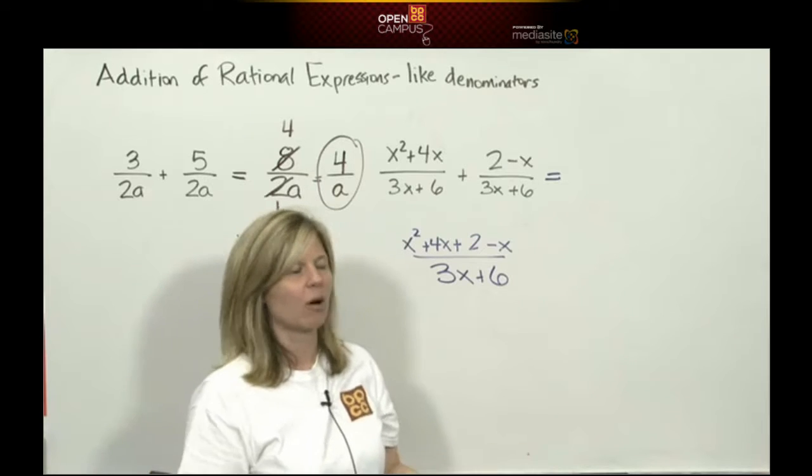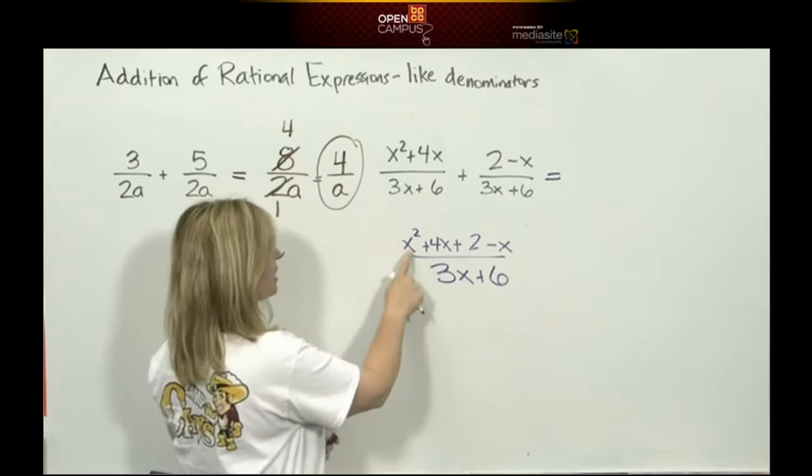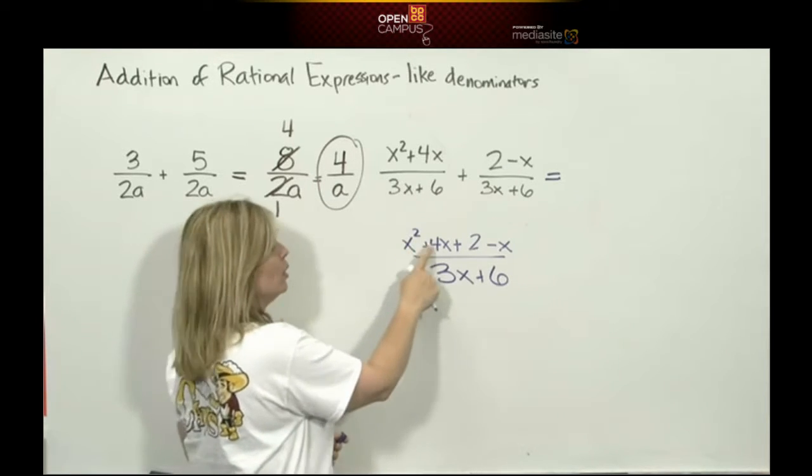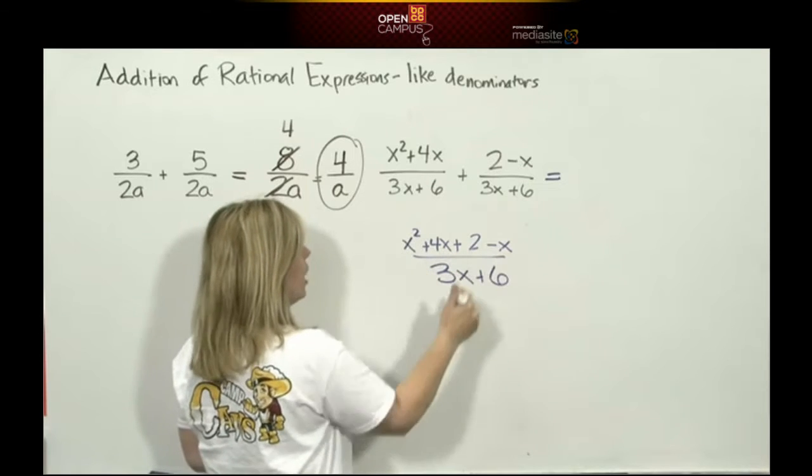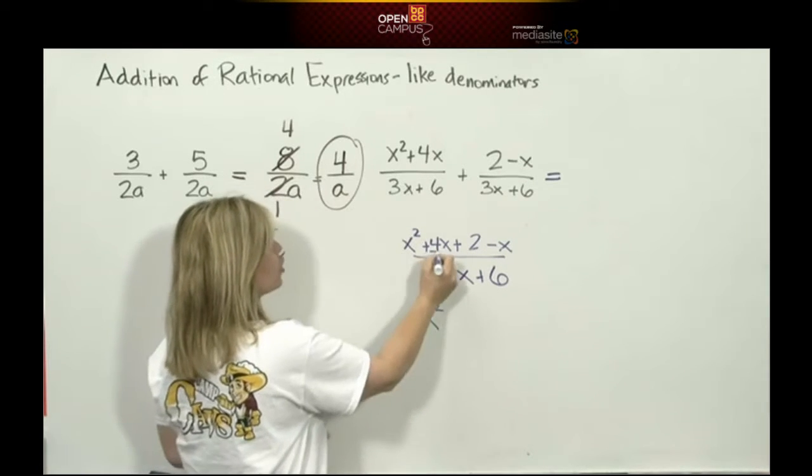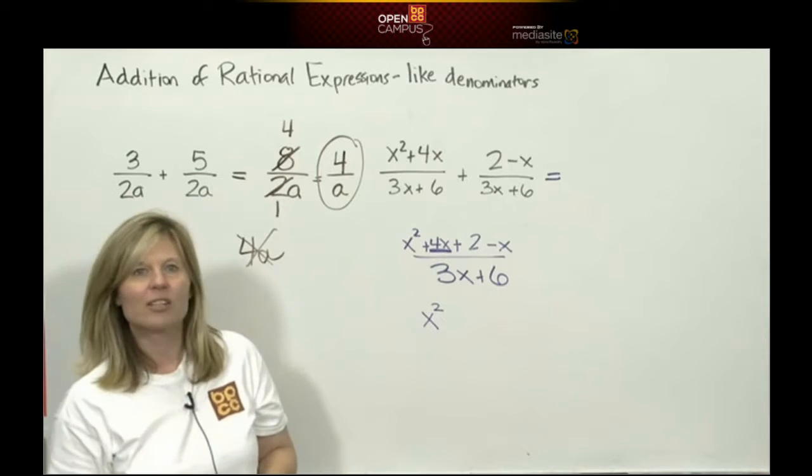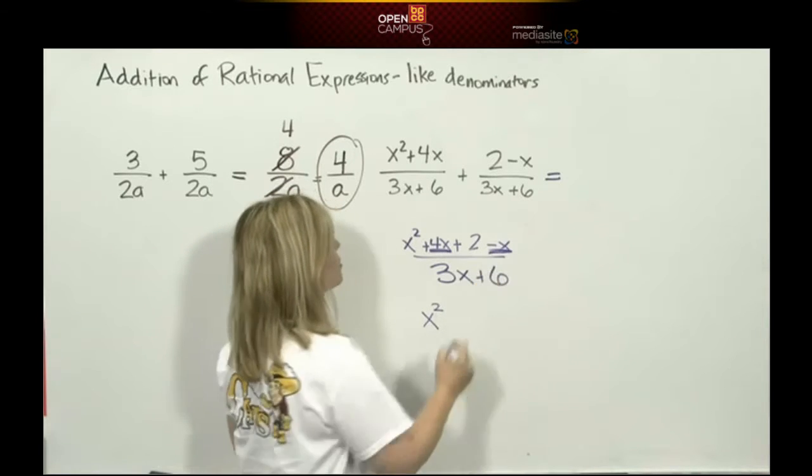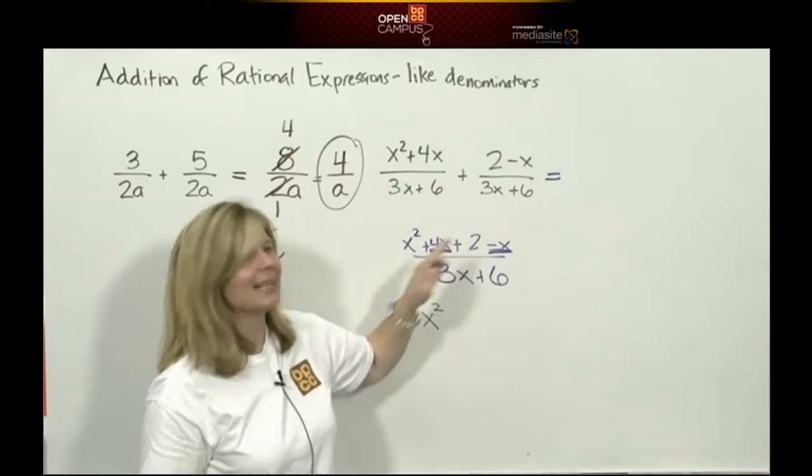Now I have 1, 2, 3, 4 terms in the numerator to add. From the beginning of this course, I can only add terms that are alike. So if I look closely, that's an x squared term, do I have any other x squareds? No, so I have to leave that x squared. The next term is 4x, do I have like terms? Sure, I have a negative x.